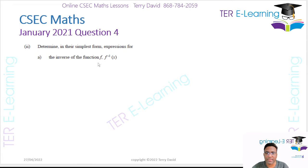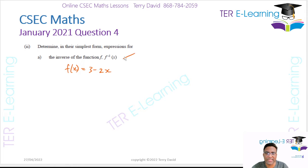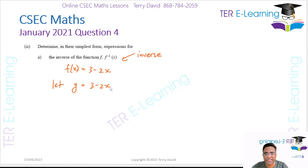Next, determine in the simplest form an expression for the inverse. So f of x is 3 minus 2x. These are the steps we usually take: we let y equal to 3 minus 2x, then the next step is to interchange x and y. So you're going to end up with x is equal to 3 minus 2y.